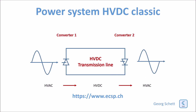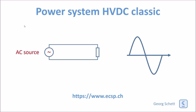This is a schematic of HVDC transmission. On one end of the line you have AC, then a converter converting AC to DC. At the far end of the line, a second converter converts the DC back to AC.